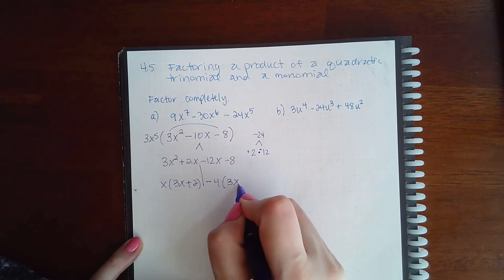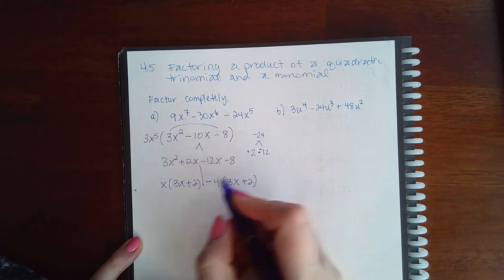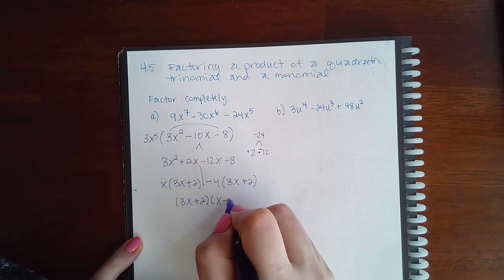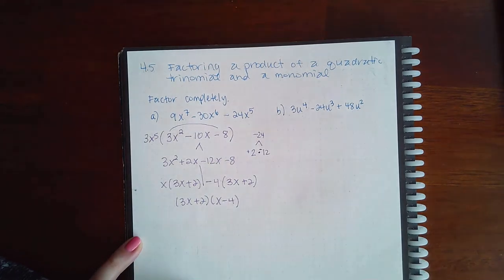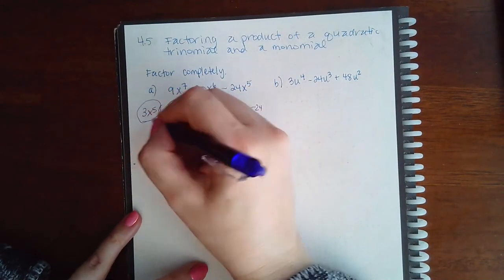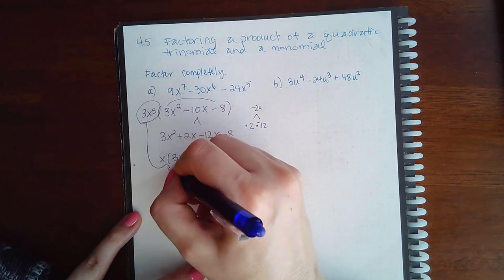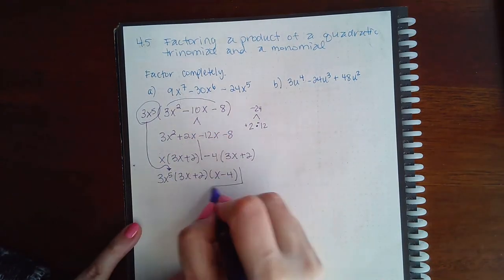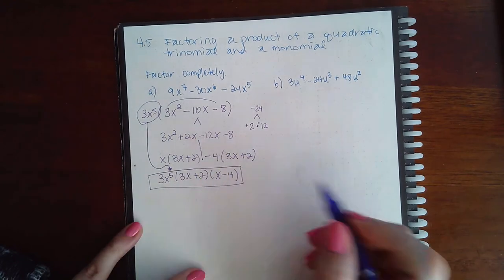And we get positive 3x and positive 2, and then finally factor out the 3x plus 2 leaving me with x minus 4. Just can't forget about the GCF from the very beginning. You have to include that in your final answer in order for you to get the problem correct.